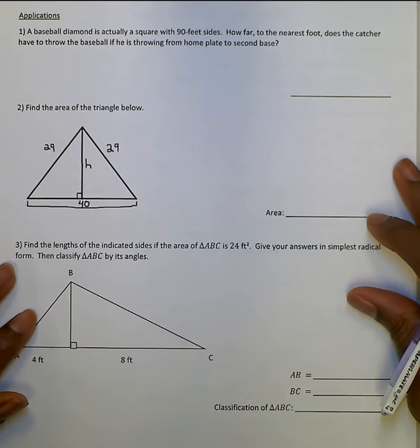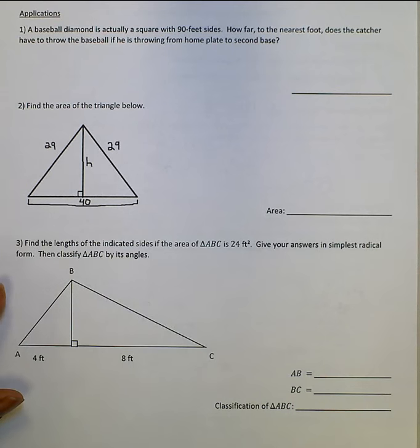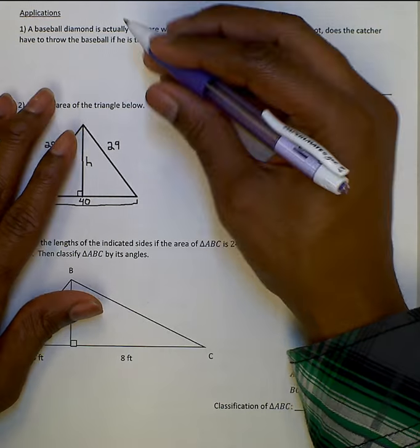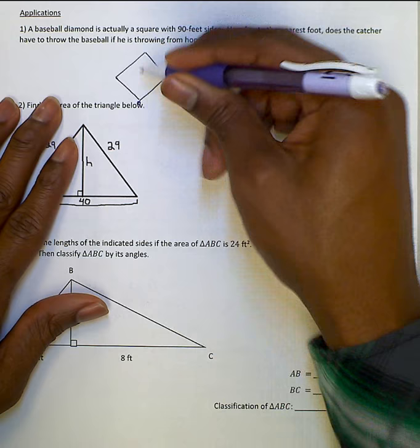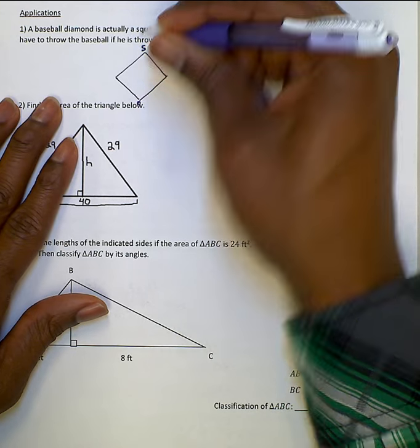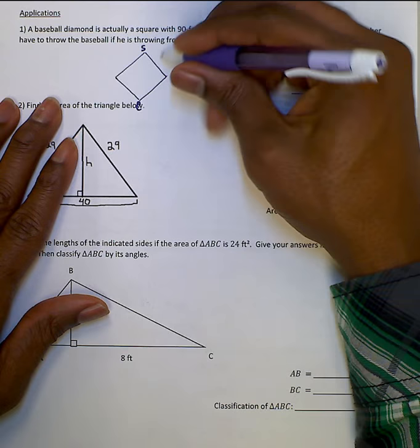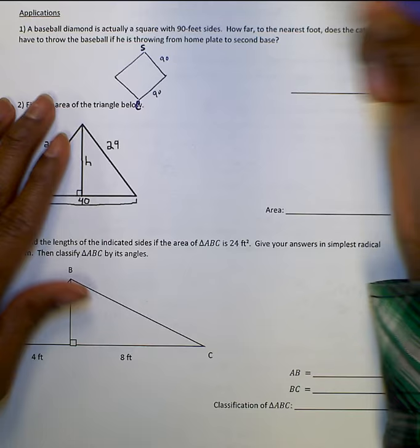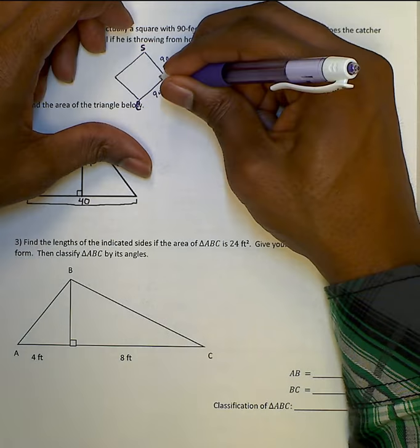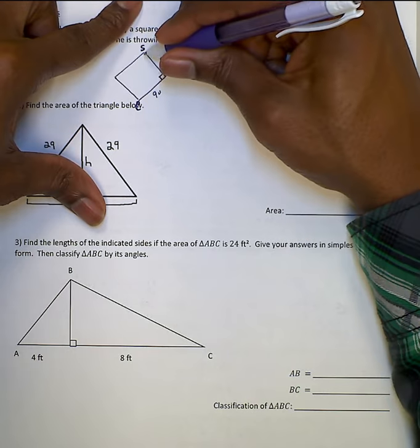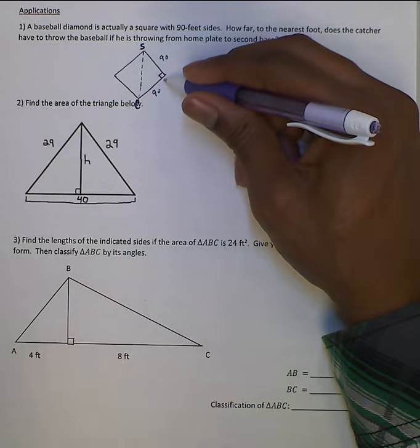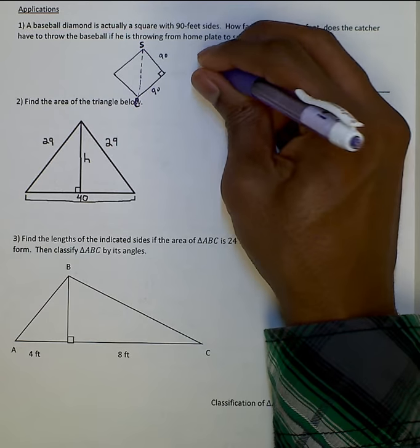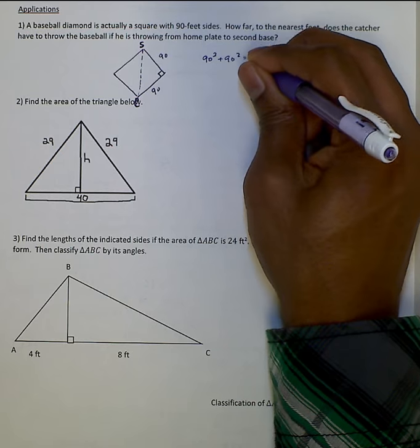Application here. A baseball diamond is actually a square with 90-foot sides. How far to the nearest foot does the catcher have to throw the baseball if he's throwing from home plate to second base? So here we go. I'm going to draw a baseball diamond. The catcher would be here, second base would be here. What it tells us is that this is 90 feet sides. And since this is a square, I know this is 90 degrees. What they're asking us for is this distance. We can find this distance because this is going to be a right triangle.